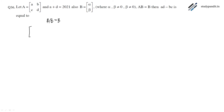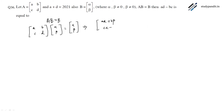From the question, we write the matrix [A, B; C, D] times [alpha; beta] equals [alpha; beta]. Performing the matrix multiplication, we get A·alpha plus B·beta, and C·alpha plus D·beta, equals [alpha; beta].